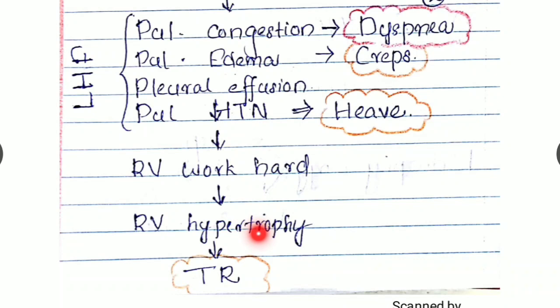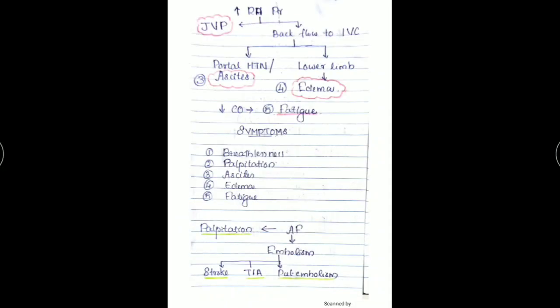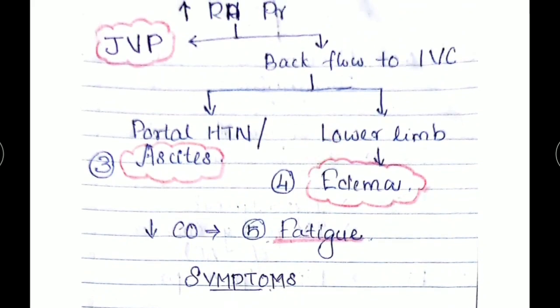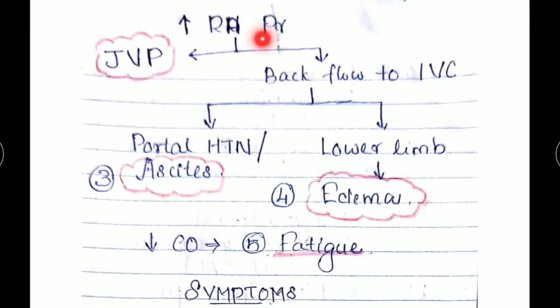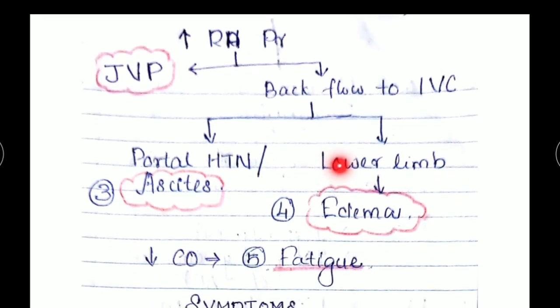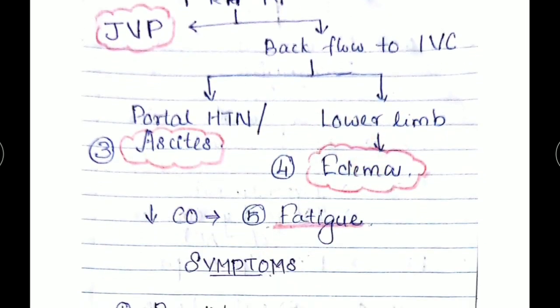And this hypertrophied right ventricle exerts pressure on the right atria, resulting in elevated JVP, back pressure to the inferior vena cava resulting in portal hypertension and thus ascites, impaired drainage to the lower limb resulting in peripheral edema. Also decreased cardiac output because of regurgitation resulting in fatigue. This is the basic pathology.